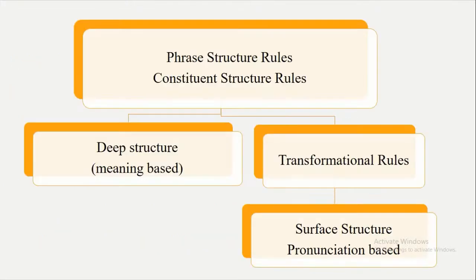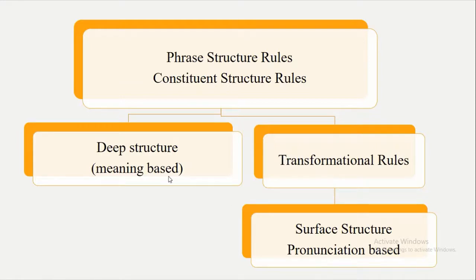In Transformational Generative Grammar there are two important elements: phrase structure rules (also called constituent structure rules) and transformational rules. In transformational rules, we have deep structure and surface structure. We will talk about phrase structure rules or constituent structure rules in our next lecture. Here we are talking about transformational rules, and deep and surface structures are two important parts of transformational rules.